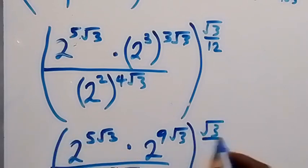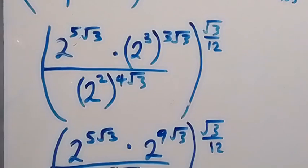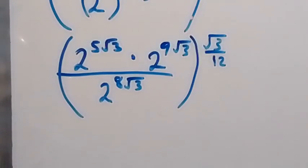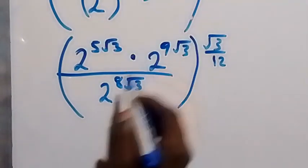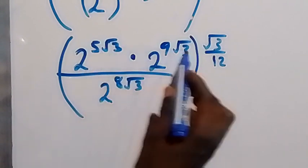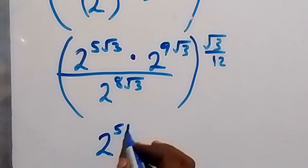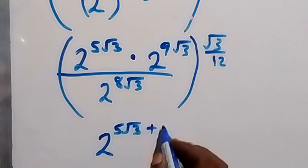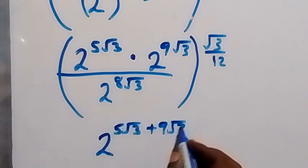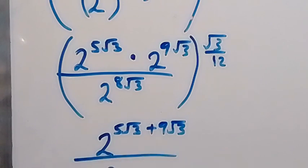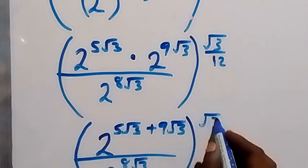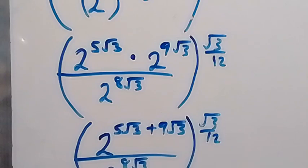In the next step, we apply the law of indices. Since they have the same base, we add the powers. So we have 2 raised to power 5 root 3 plus 9 root 3, divided by 2 raised to power 8 root 3, all raised to power root 3 over 12.